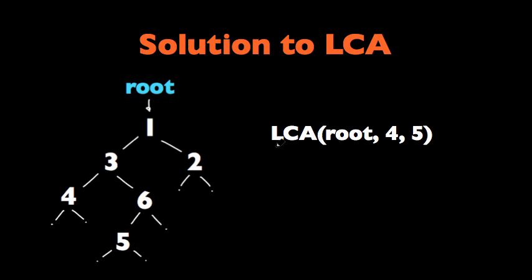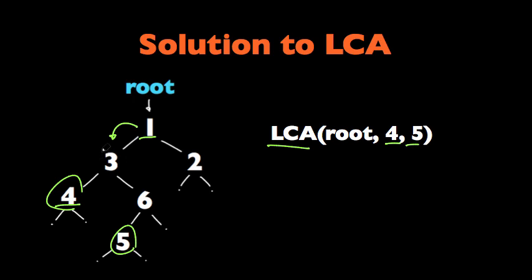Let's say we're trying to find the LCA, the lowest common ancestor, of four and five. What I would do first is find a path from the root to one of the elements — four, let's say. I do that by going left and then left again, and right there I find the element. So the path to that element would be: one, three, four.